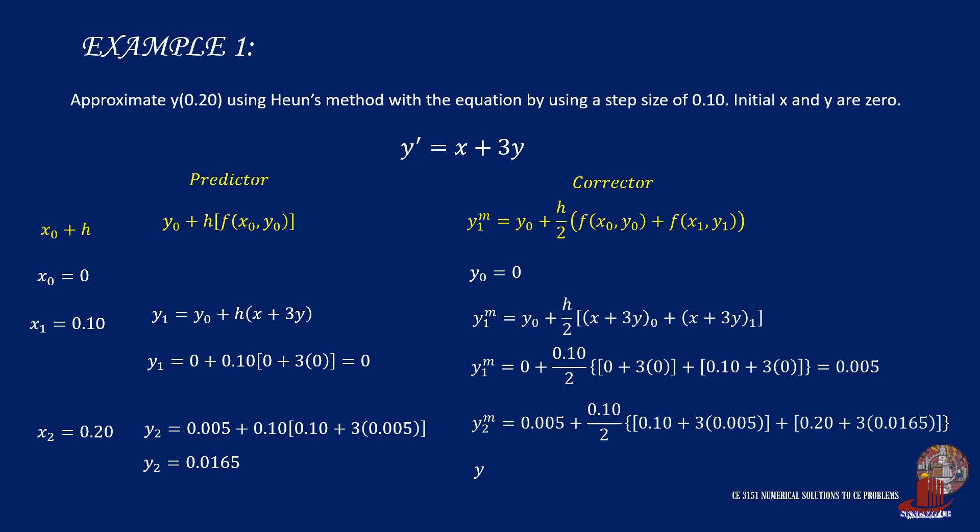Let's correct this y2 predictor through the formula. So we get the modified y1 of 0.005 plus half of the step size, then multiplied by the previous point function 0.1 plus 3 times 0.005, and these are the coordinates of x1 and y1. Then add the current values like x2 of 0.2 plus 3 times y2 from the predictor, and it is 0.0165. So the modified y2 is computed as 0.026025. This is the y2 required.